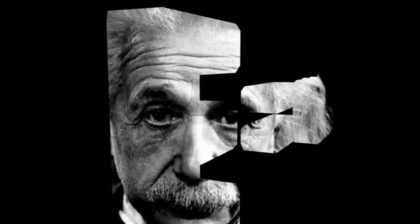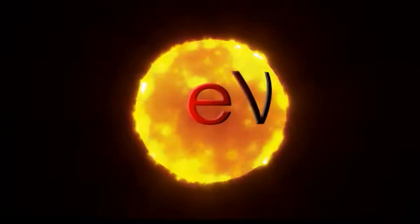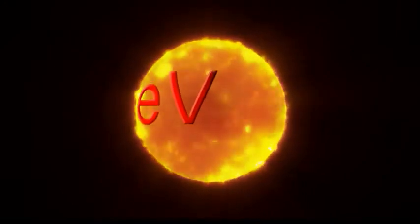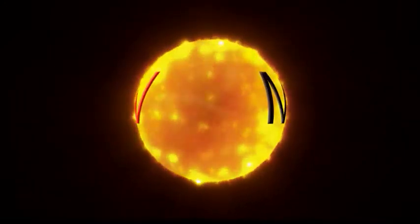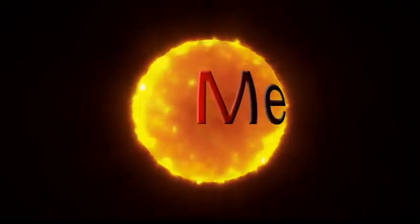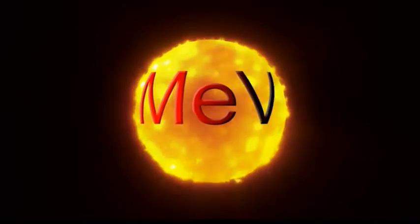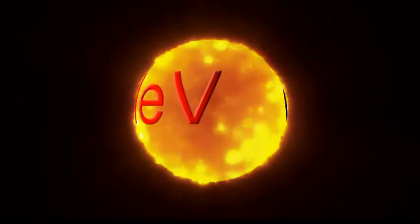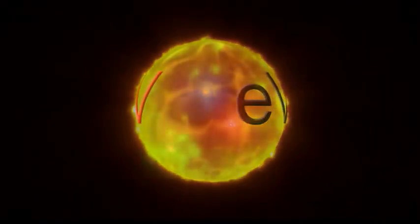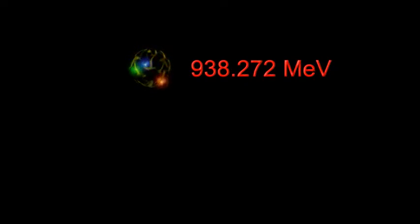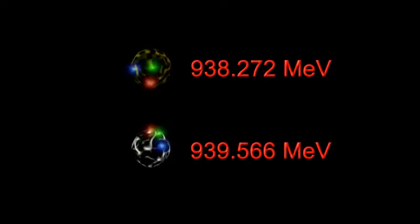Ever since Einstein demonstrated the equivalence of mass and energy, physicists often give the rest mass of tiny particles like protons, neutrons, and electrons in units of energy. Two convenient energy units are the electron volt (eV) and its cousin million electron volts (MeV). Using these units, here are some facts that will come in handy: the rest mass of the proton is 938.272 MeV, the rest mass of the neutron is 939.566 MeV.